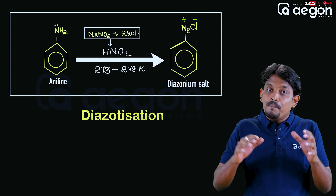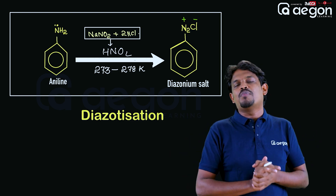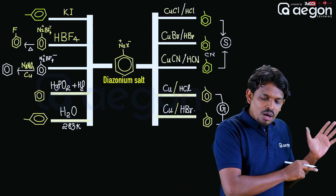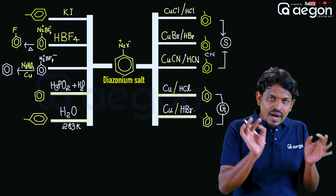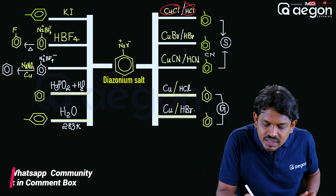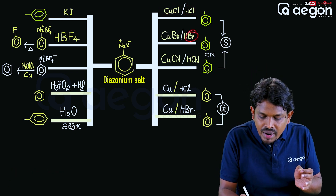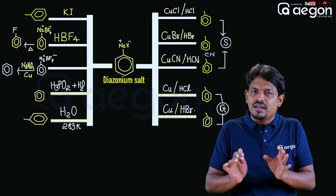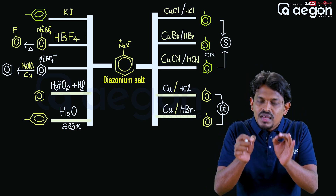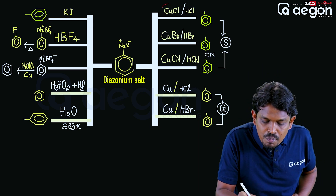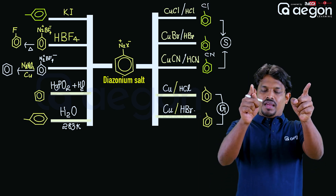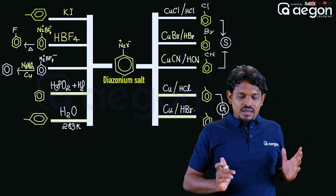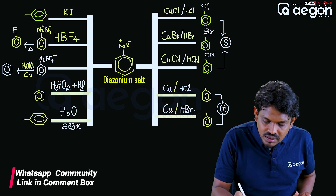Diazonium salt undergoes a number of reactions. Using CuCl/HCl, the nucleophile Cl minus attaches to the benzene ring giving chlorobenzene. CuBr/HBr gives bromobenzene. CuCN/HCN gives cyanobenzene. These are Sandmeyer's reactions from the previous chapter.